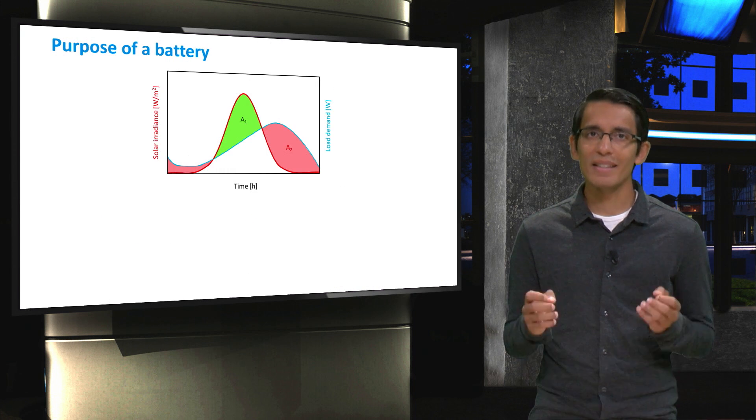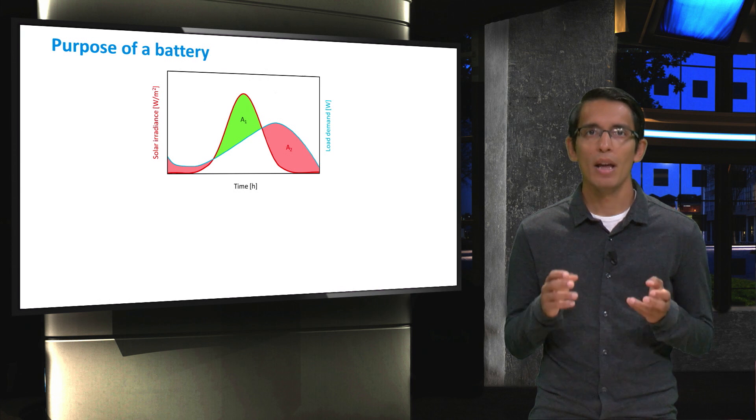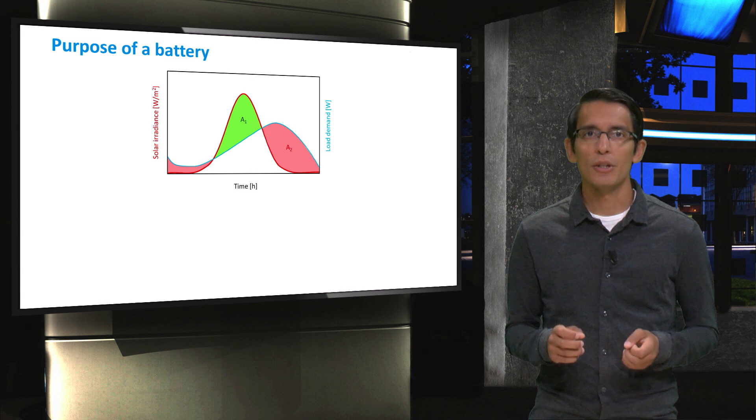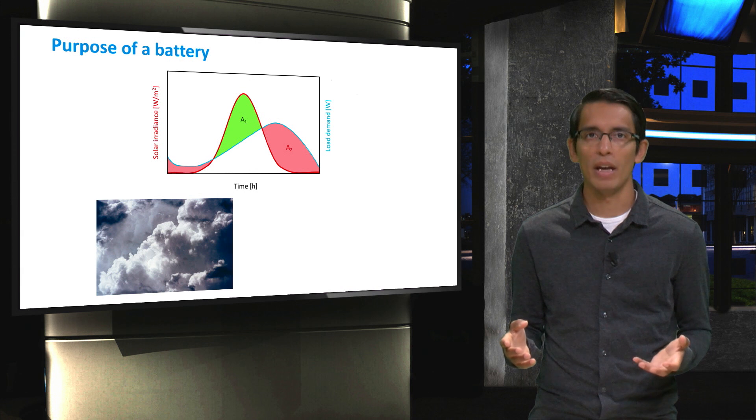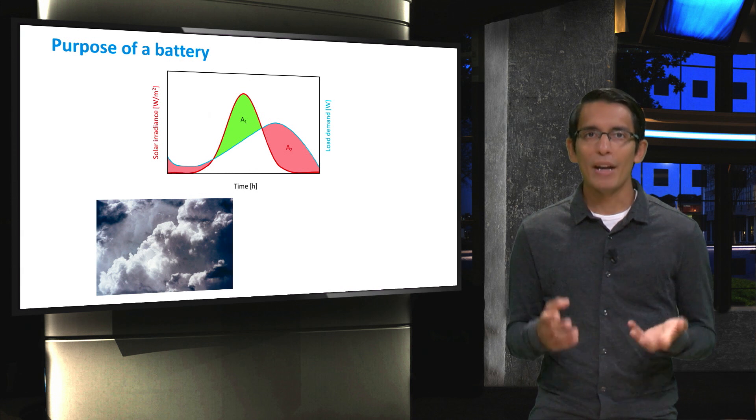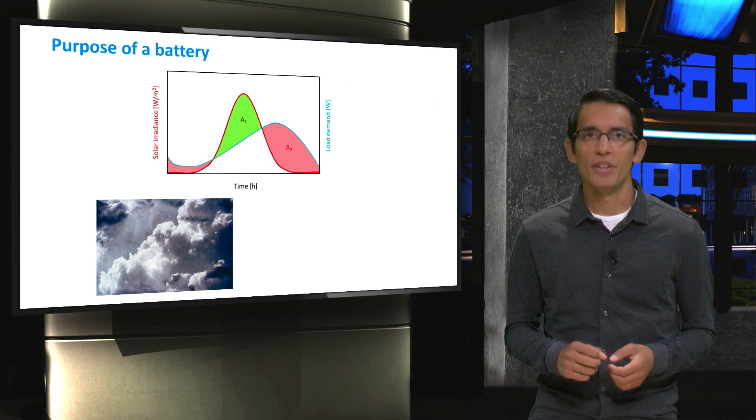So we have daily and seasonal fluctuations, which require energy storage from the battery. You can also probably imagine that the PV power production doesn't always look as smooth as that red curve, due to clouds passing by overhead, for example. A battery will help with this as well. However, there is another reason why off-grid systems need a battery.